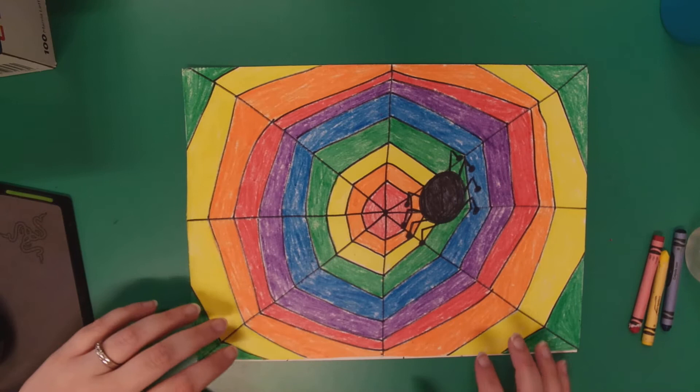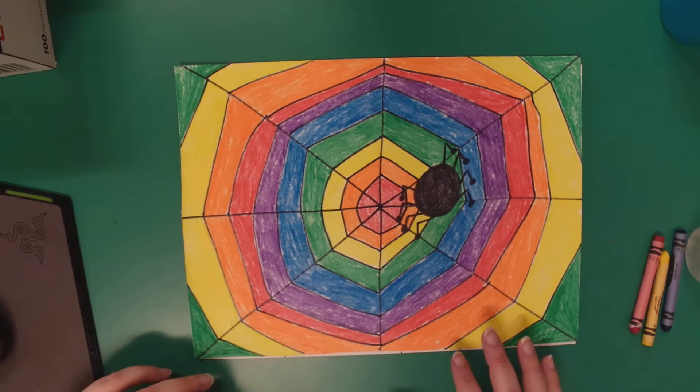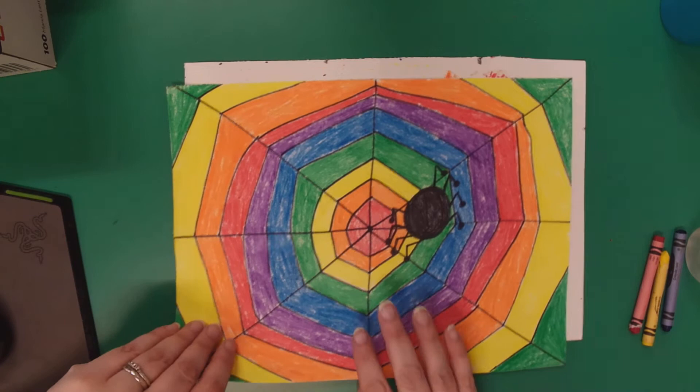Hi boys and girls, today we're going to use our colors from the color wheel and rainbow order to create a spider web. Since it's October now and we're getting closer to Halloween, I thought it might be cool to do a spider web. I'm going to show you how to draw this - it's not that hard at all.